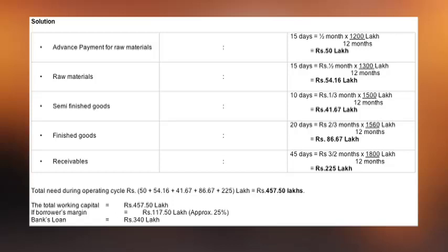The total comes to: fifty lakhs (advance payment stage) plus fifty-four point one six (raw material stage) plus forty-one point six seven (semi-finished good stage) plus eighty-six point six seven (finished good stage) plus two hundred twenty-five (receivable stage). That comes to four hundred fifty-seven point five zero lakhs.